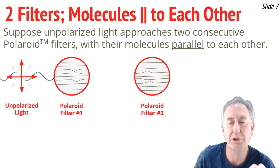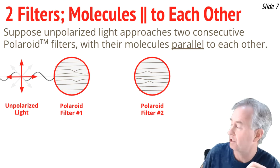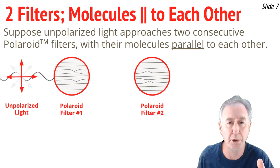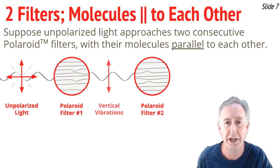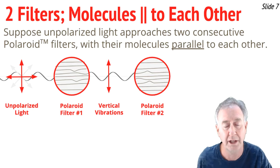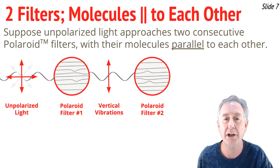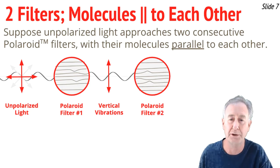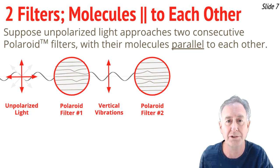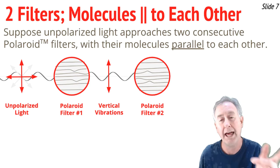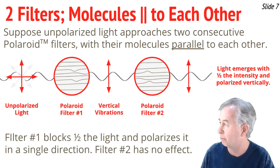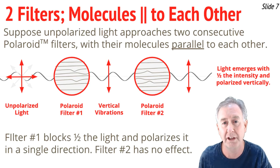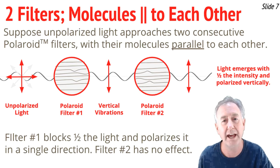Now let's consider the situation where we have two polaroid filters with their molecules aligned parallel to each other — say, both horizontal. Unpolarized light vibrating up and down and left and right approaches the first filter. Those horizontal molecules absorb the horizontal vibrations, and what gets through the first filter are the vertical vibrations only — that's reduced the intensity by one half. Now those vertical vibrations approach the second filter, but the second filter's molecules are also horizontal, so it can only absorb horizontal vibrations. The polarized light passing through the first filter also passes through the second. The net effect: filter one blocks half the light and polarizes it vertically, and filter two has no effect whatsoever. Half the light gets through, vibrating vertically.